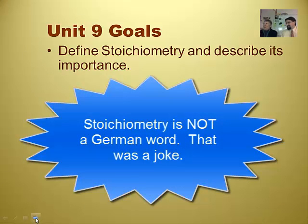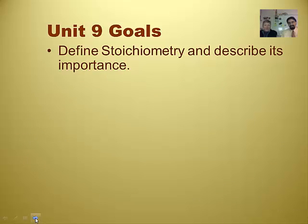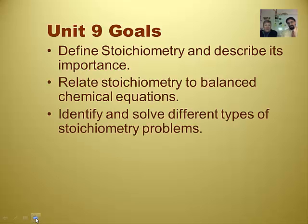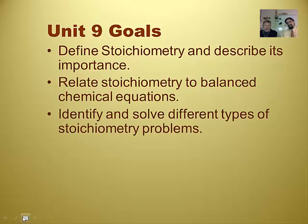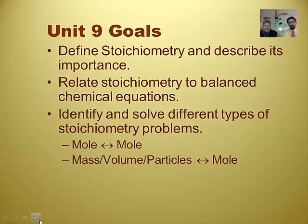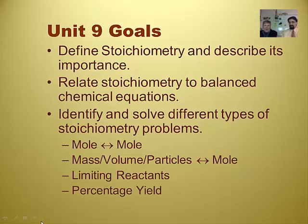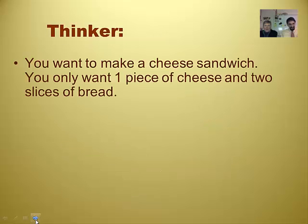We need to define what stoichiometry is, and Mrs. G already said it's a German word, and describe why it's important. We need to relate stoichiometry to balanced chemical equations. That was the thing that we just did. That's why we learned it first. We identify and solve different types of stoichiometry problems, and these are mole to mole ratio problems, mass volume particle to mole ratio problems, and we also do something called limiting reactants and percent yield. And at least percent yield sounds like it's going to be easy, part over whole times 100.